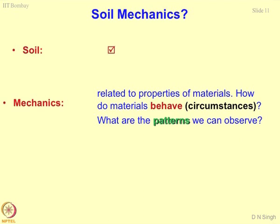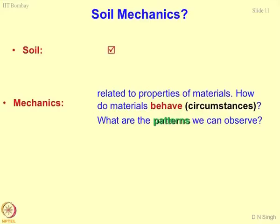Within the soil mass all these attributes which we have talked about are inbuilt. So, this is the interaction of the external environment and the soil mass, both having their own attributes and characteristics. What mechanics does is observing how patterns are formed. You do stress-strain relationships by triaxial test or direct shear test - basically recognizing causes and effects.